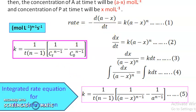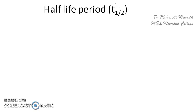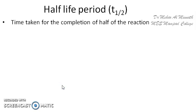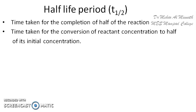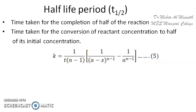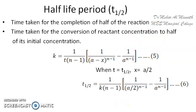Now let us look at the half-life period of the nth order reaction — we shall derive the equation for T½. The half-life period is the time taken for the concentration of the reactant to fall to half of its initial concentration. Using the general integrated rate equation, we substitute T = T½ and X = A/2 to get: T½ = 1/[K(N−1)] · [1/(A/2)^(N−1) − 1/A^(N−1)].